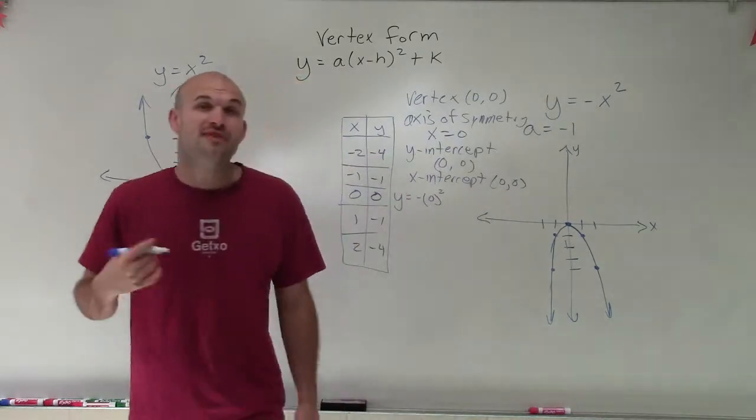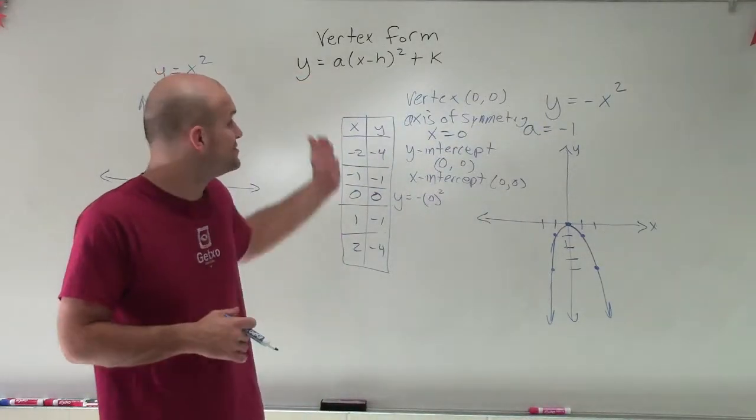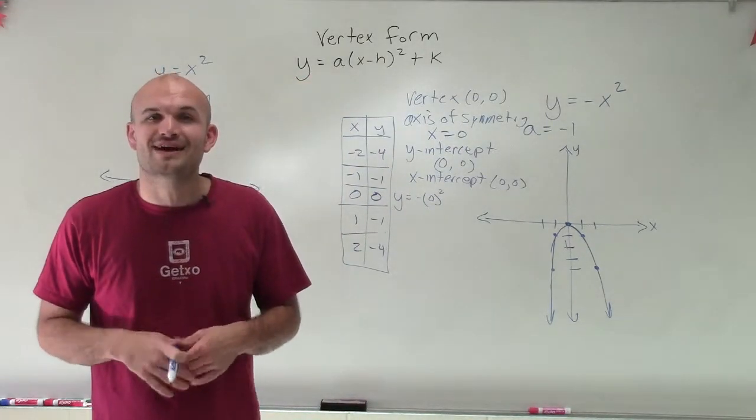So there you go, ladies and gentlemen. That is how you graph a quadratic using vertex form when you have a negative a. Thanks.